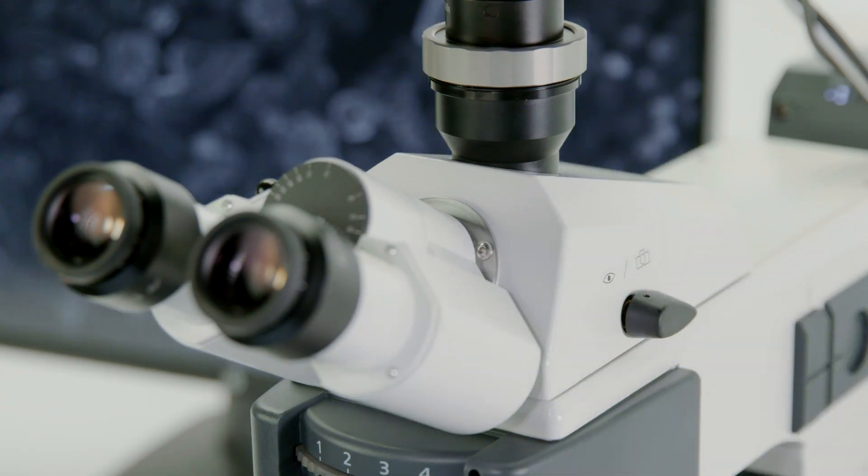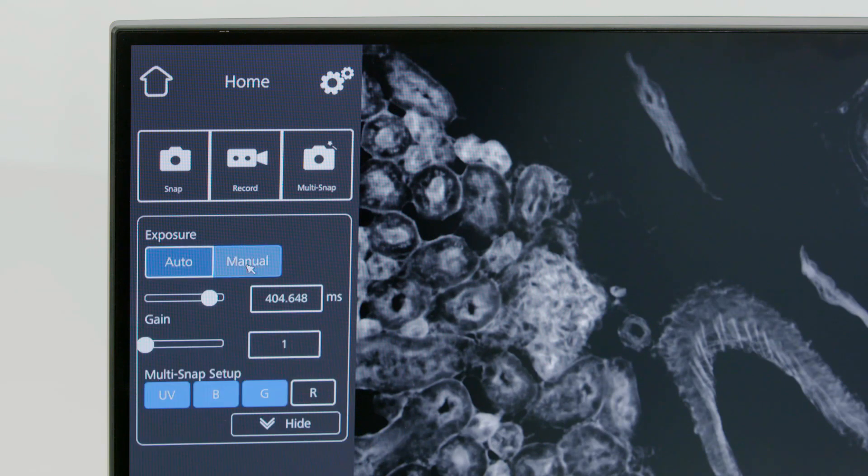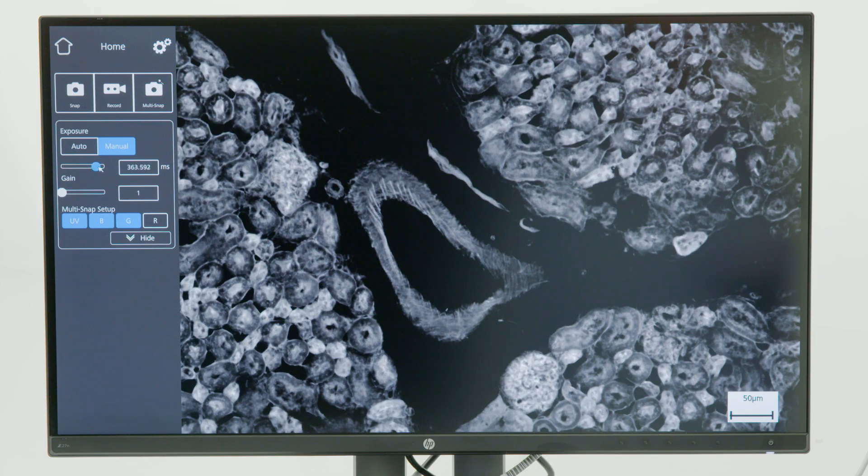Change to monitor view and switch to manual exposure time. Define an appropriate gain and exposure time for the active channel. These camera settings will now also be used for the other channels.